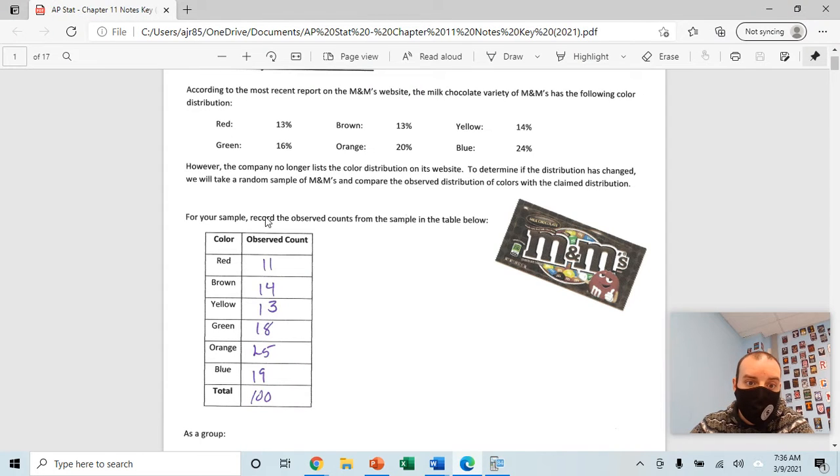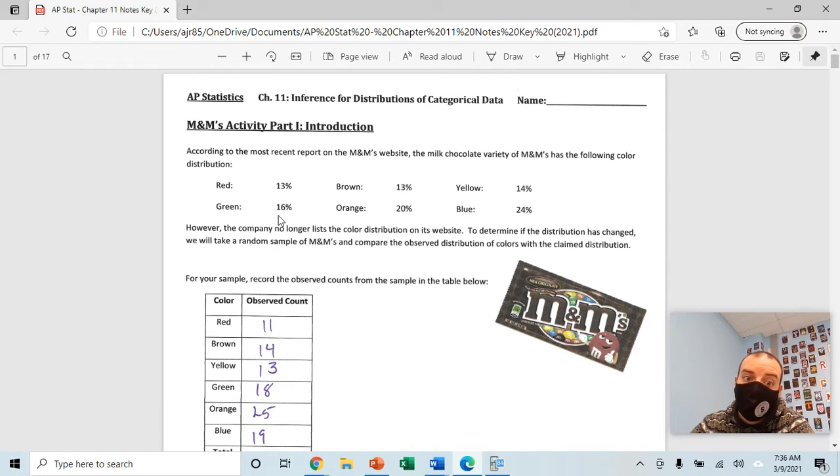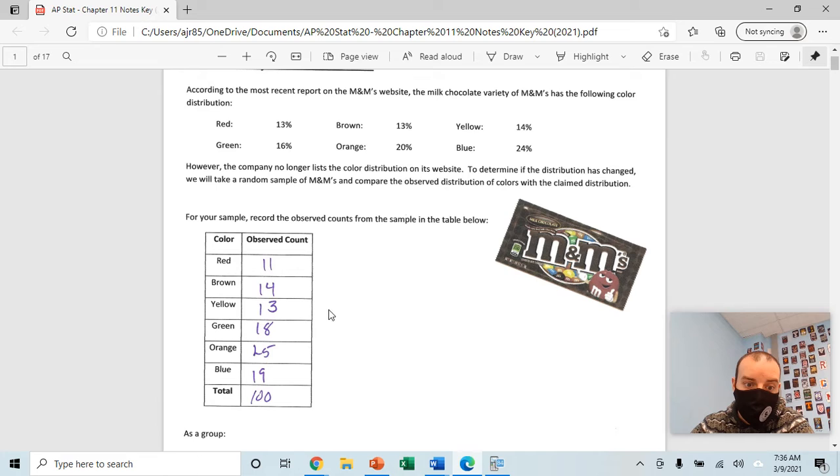So if we look at my data here, I had a hundred total M&Ms. So if I wanted to find the expected count for red, obviously pretty easy, just take 13% times 100. I observed 11 red. I would have expected to have 13 red based on the percentage that the company is saying. So you'll find your expected counts for each of your colors.